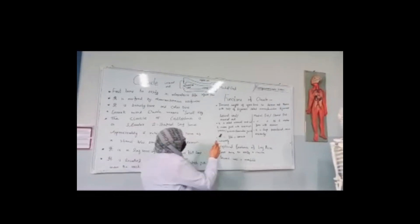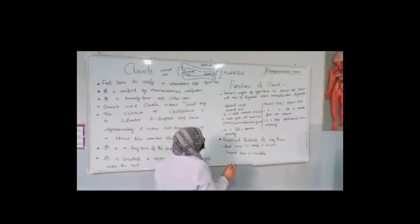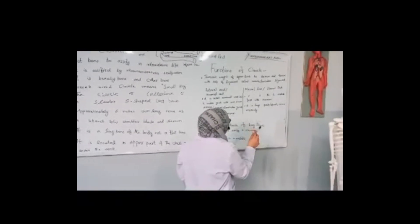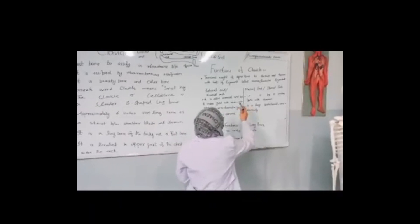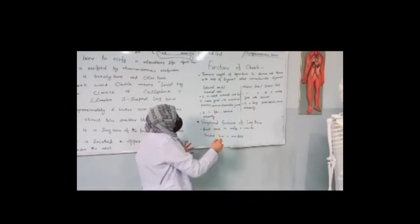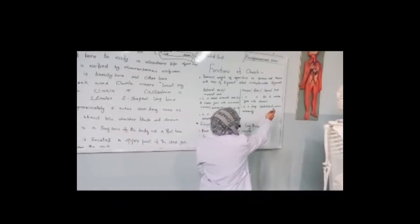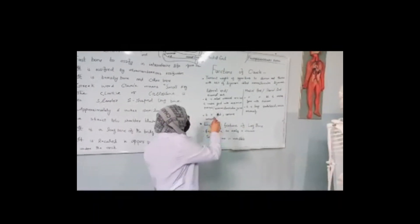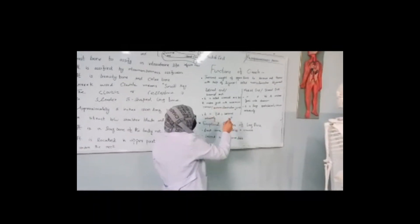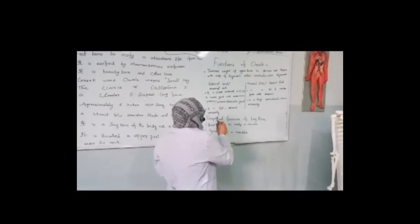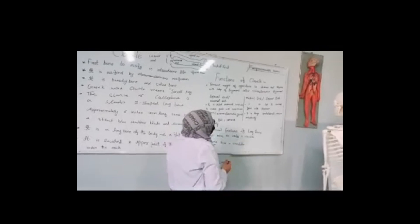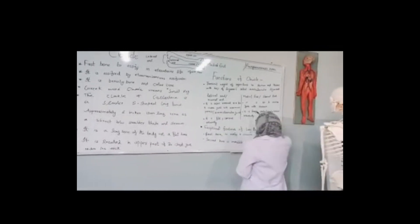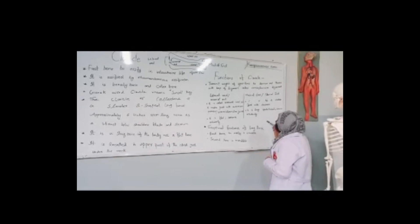Functions of the clavicle include transmitting the weight of the arm to the sternum and thorax. It has ligaments: the lateral end ligament, also called the acromial ligament or acromioclavicular ligament, and the medial end ligament, also called the sternoclavicular ligament. The lateral end makes a joint with the acromion forming the acromioclavicular joint. The medial end is large and makes a joint with the sternum.